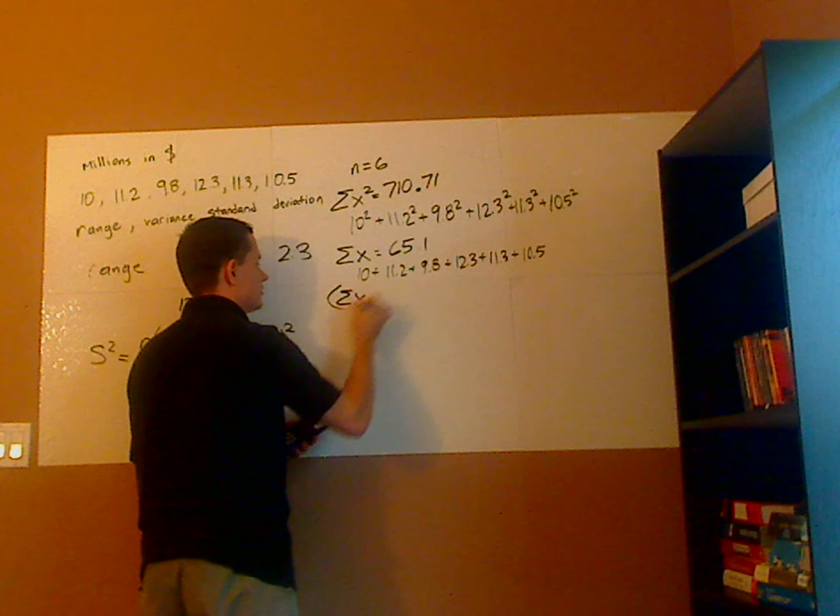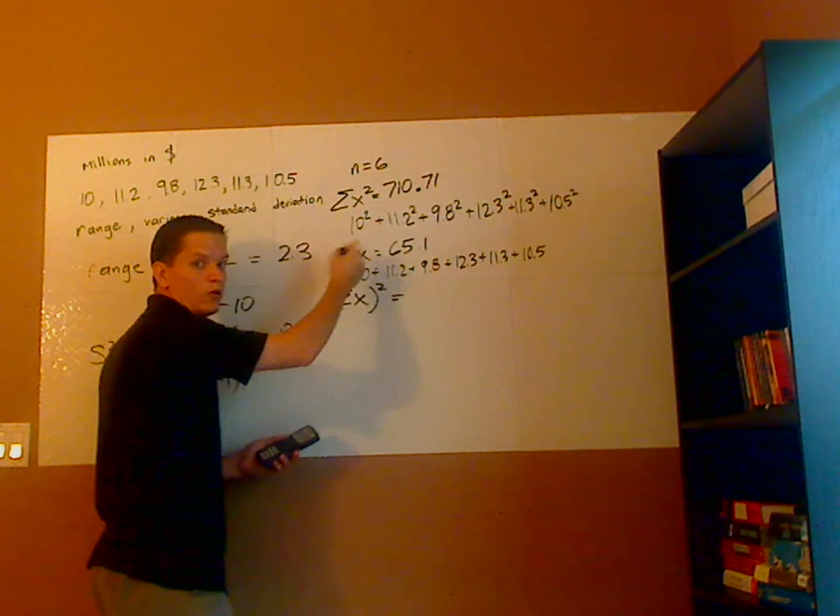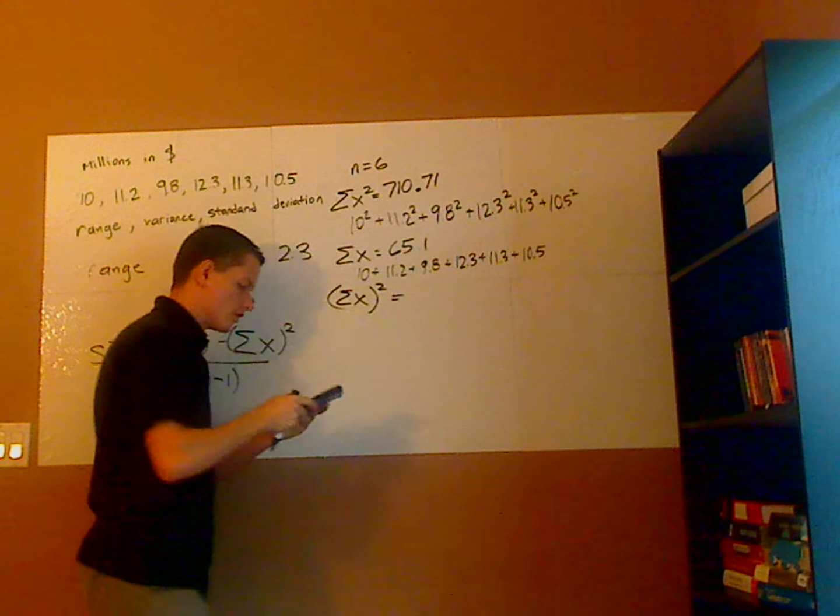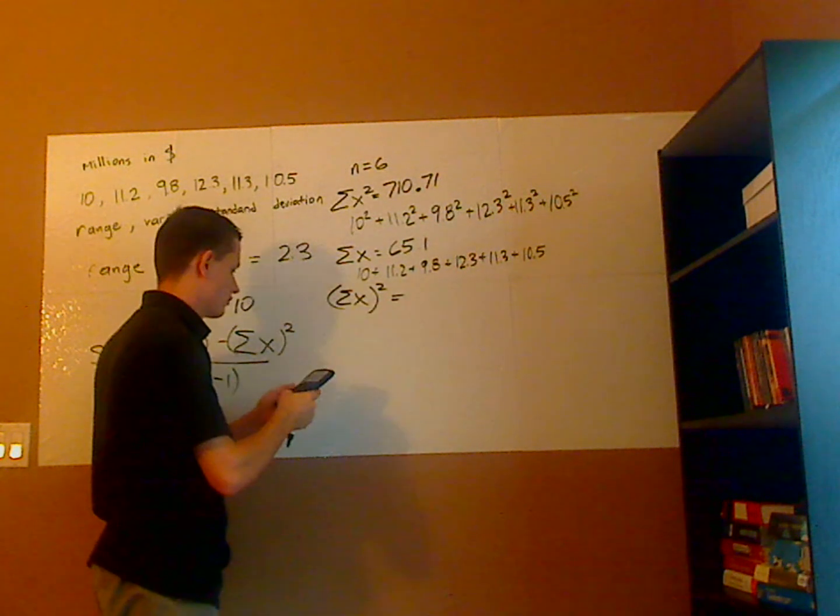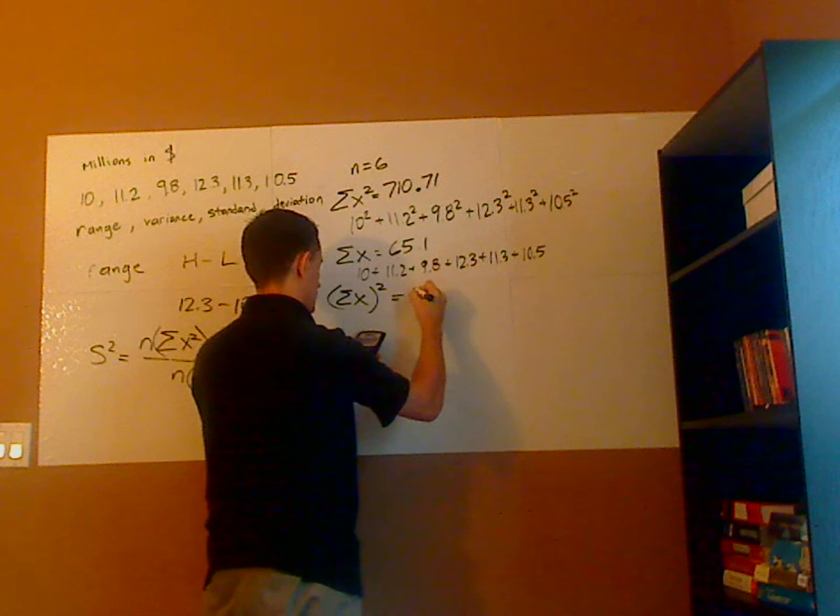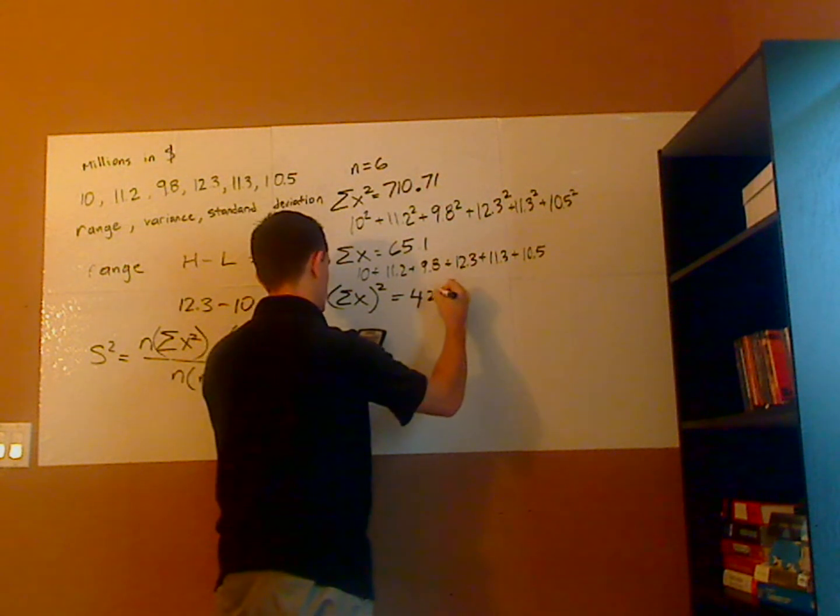Now summation of x squared would be this whole thing squared. So 65.1 squared is 4,023.01.